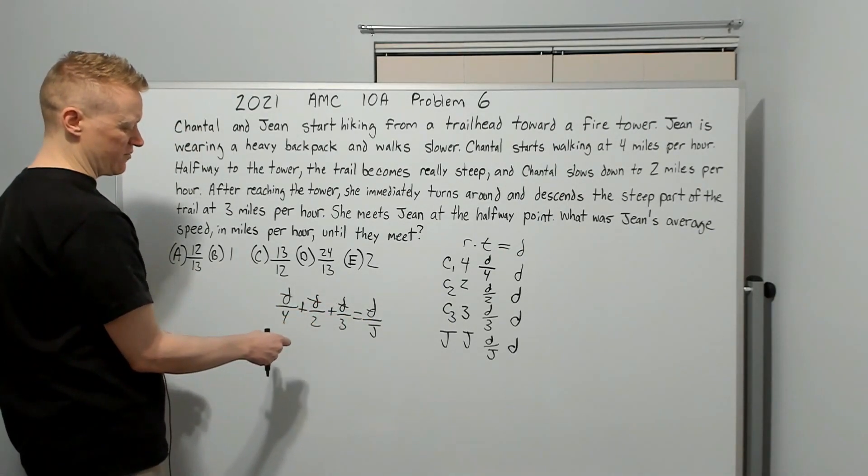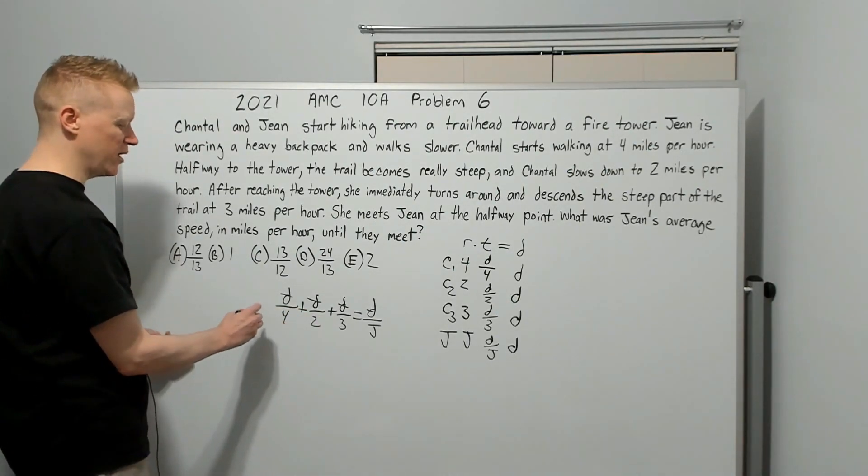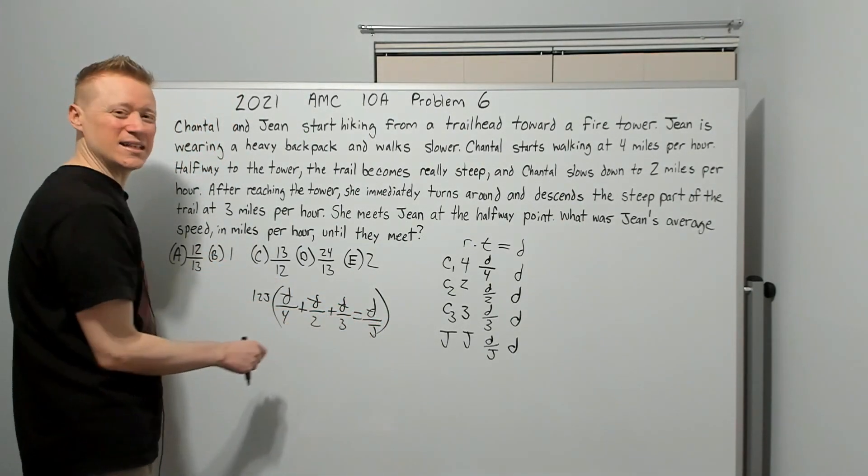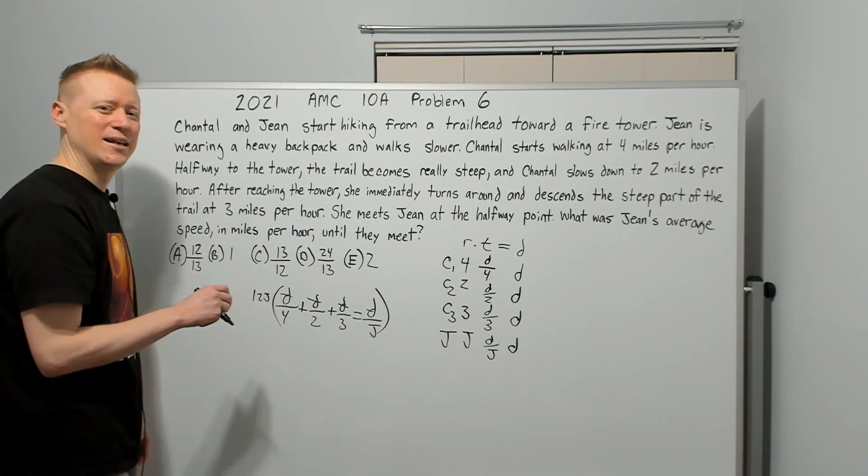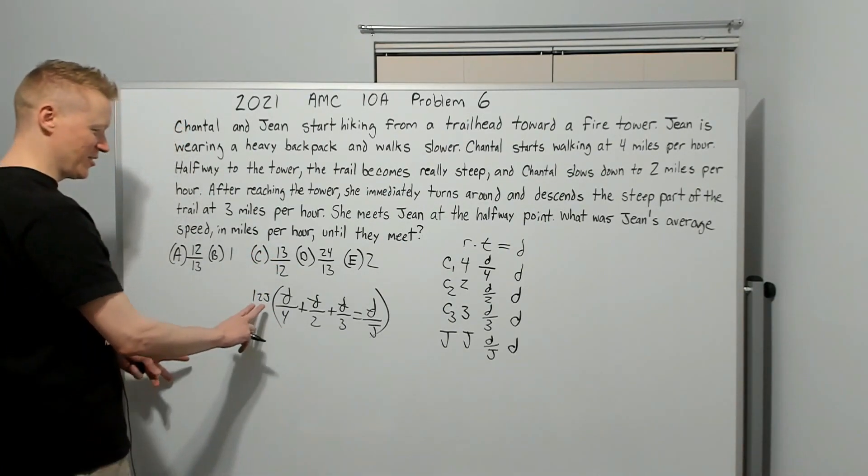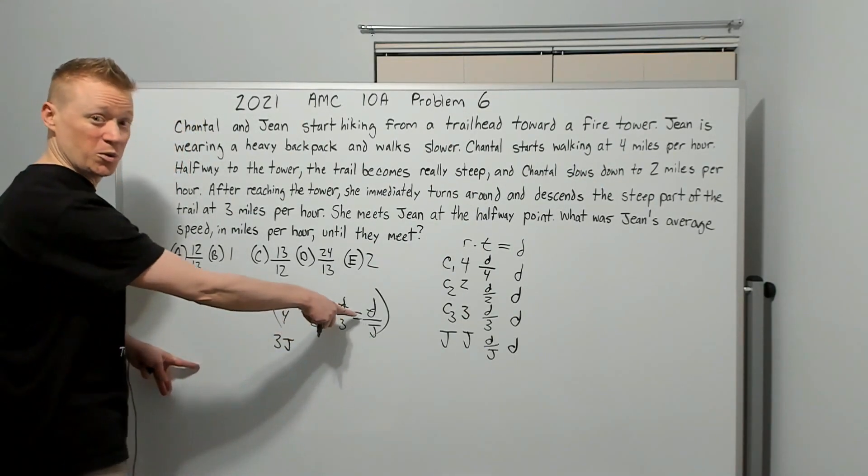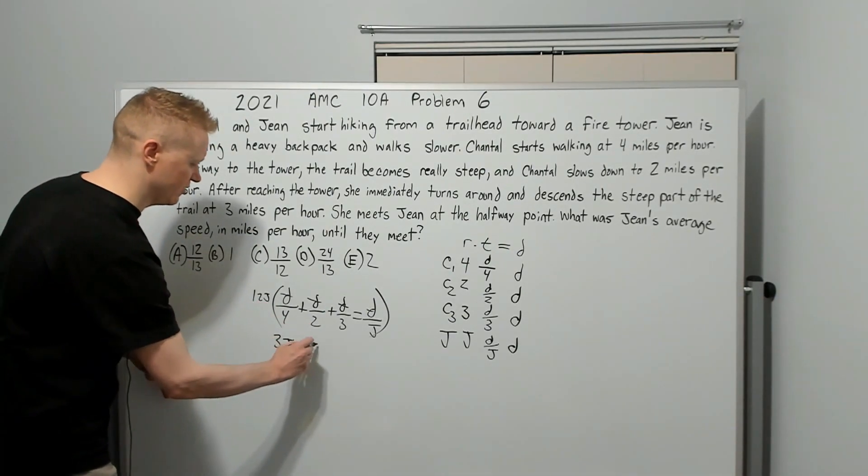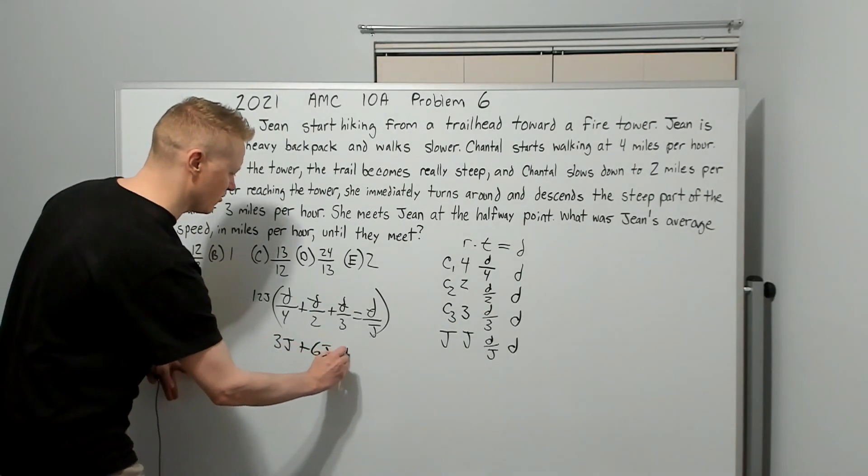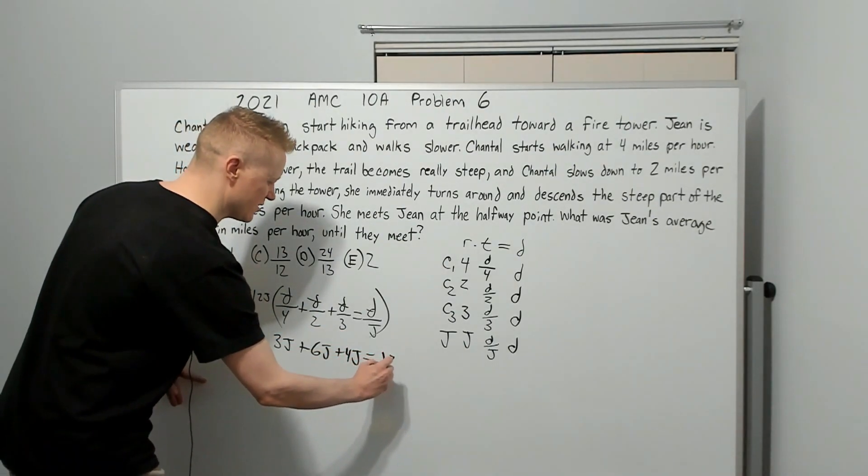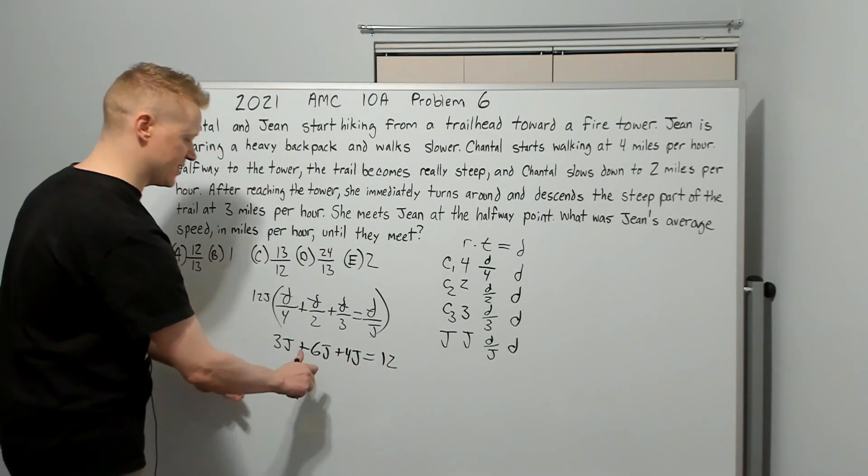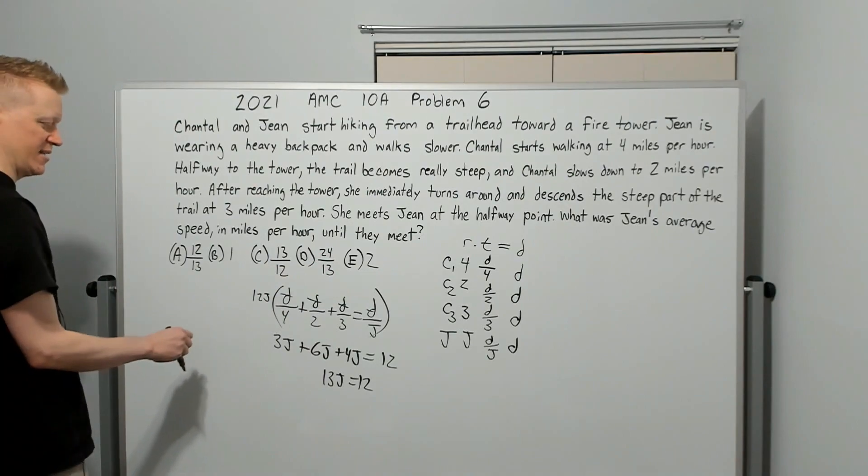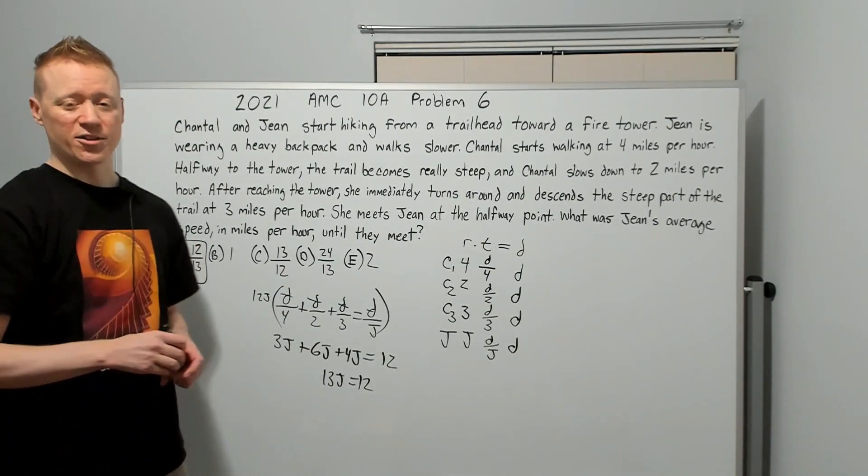So D over four plus D over two plus D over three equals D over J. Then get rid of the Ds. We don't want the fractions. We're going to multiply by the least common multiple of everything, 12J. Multiply by 12J on both sides. By the way, you can't put parentheses around an equal sign in school, but on the competition, you get to break the rules. So 12J divided by four is 3J, plus 6J, plus 4J equals 12. So we've got 13J equals 12. And J is going to equal 12 over 13.